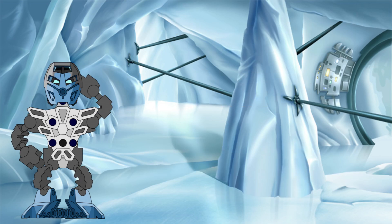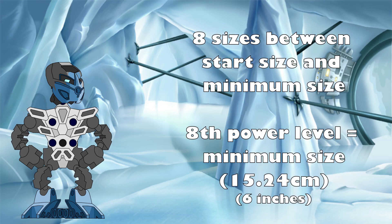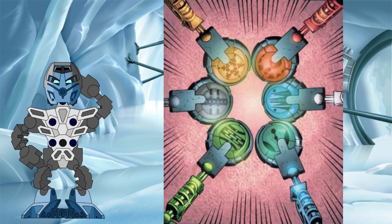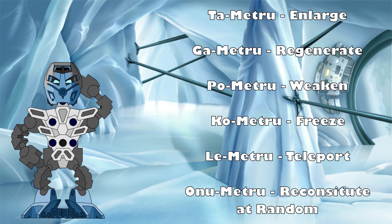Now that we have gathered the background information, let's form our hypothesis. We will look at the shrink discs first. Given what we have just discussed, we know that between the starting size and the minimum size of 15.24 centimeters, there are eight discrete sizes that the different levels of disc can cause. We also know that the eighth power level must produce a final height that is the same as the minimum.